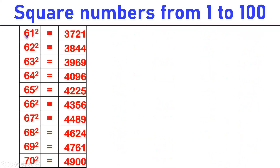61 square is equal to 3,721. 62 square is equal to 3,844. 63 square is equal to 3,969. 64 square is equal to 4,096. 65 square is equal to 4,225.